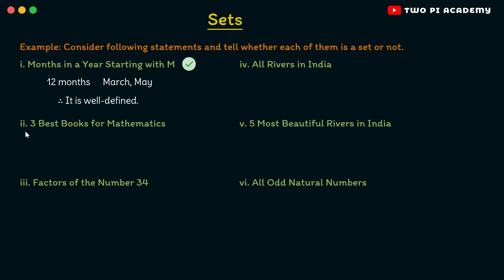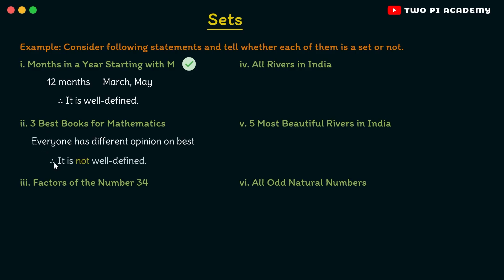Next we have: 3 best books for mathematics. One trick here is that if you see words such as 'best,' 'most,' etc., in most cases these will not be a set. Everyone has a different opinion on what is best — one person's best will not be the best for another person. Therefore, this is not well-defined and hence it cannot be a set.